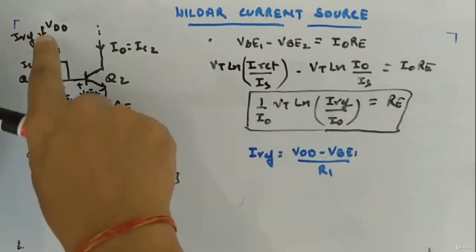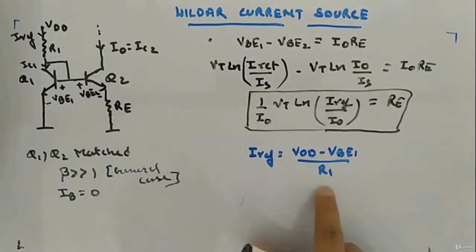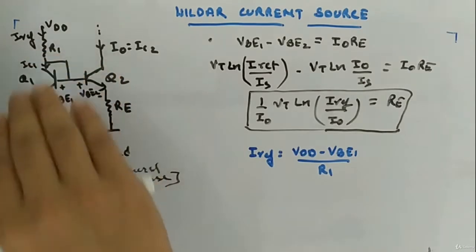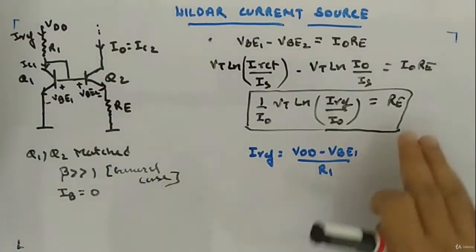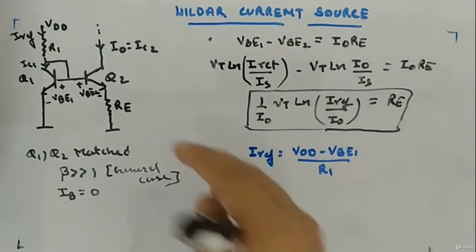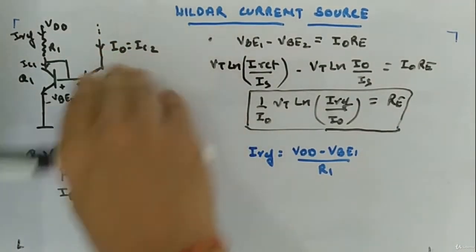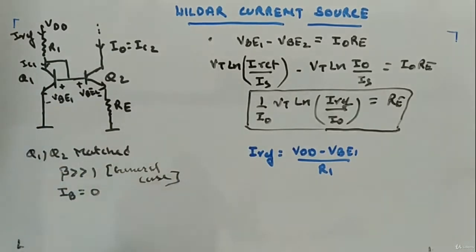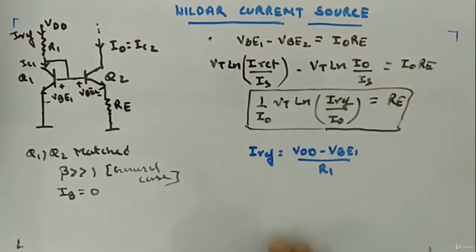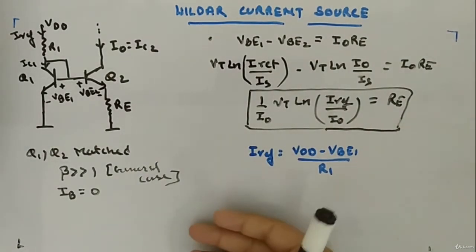Iref is equal to (VDD minus VBE1) divided by R1. Typically, R1 and I0 will be given and you will find the value of RE for that I0. The problem statement gives a desired output current I0 and a fixed R1, and you solve for RE. These are the kinds of design questions asked on the Widlar current source.